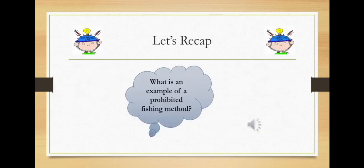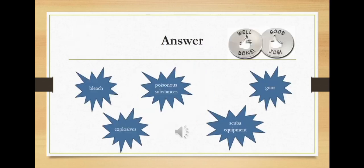Let's recap today's lesson, students. Beginning with this question: What is an example of a prohibited fishing method? Let's see how well you did. If you said or thought of the use of bleach, poisonous substances, guns, explosives, or scuba equipment are prohibited, then your answers are correct.